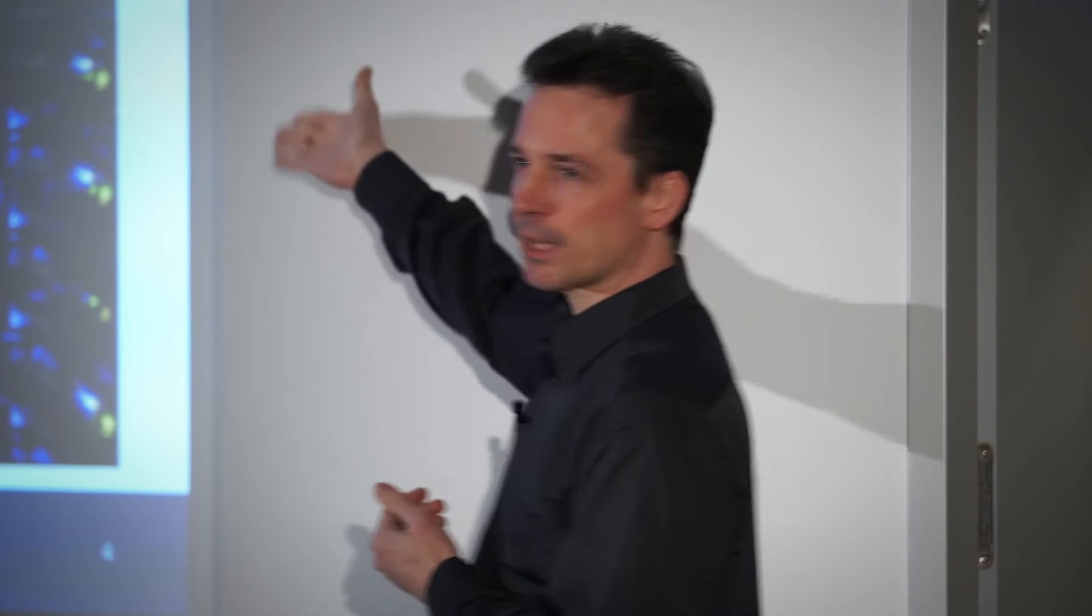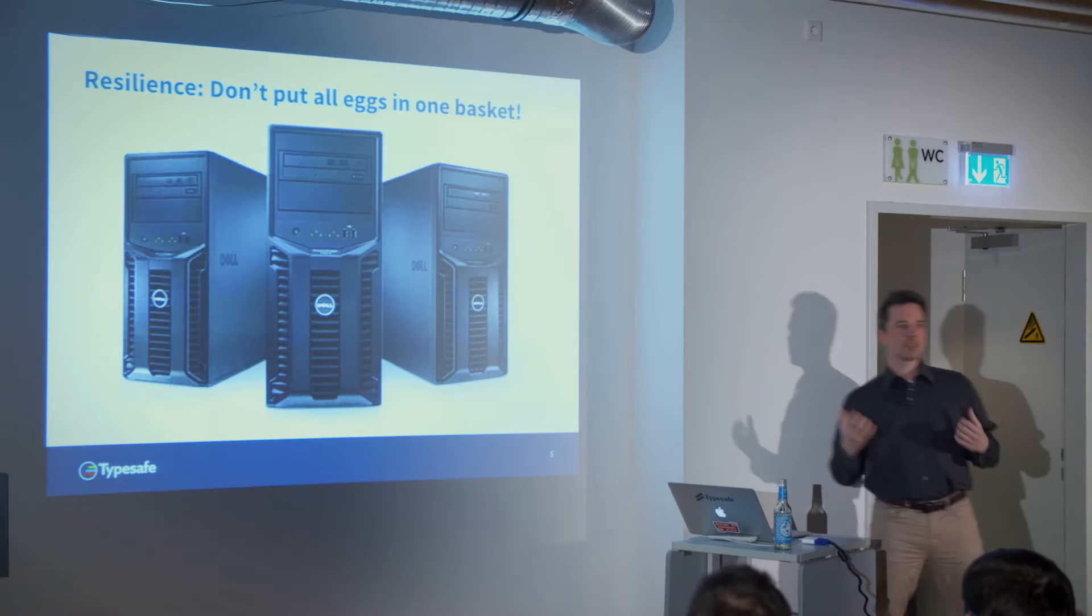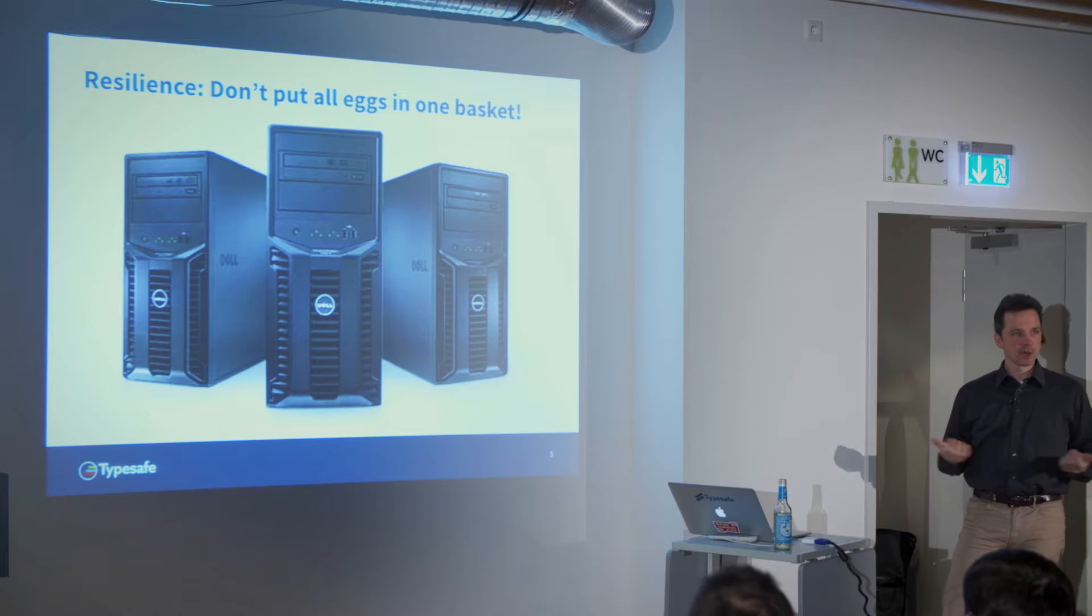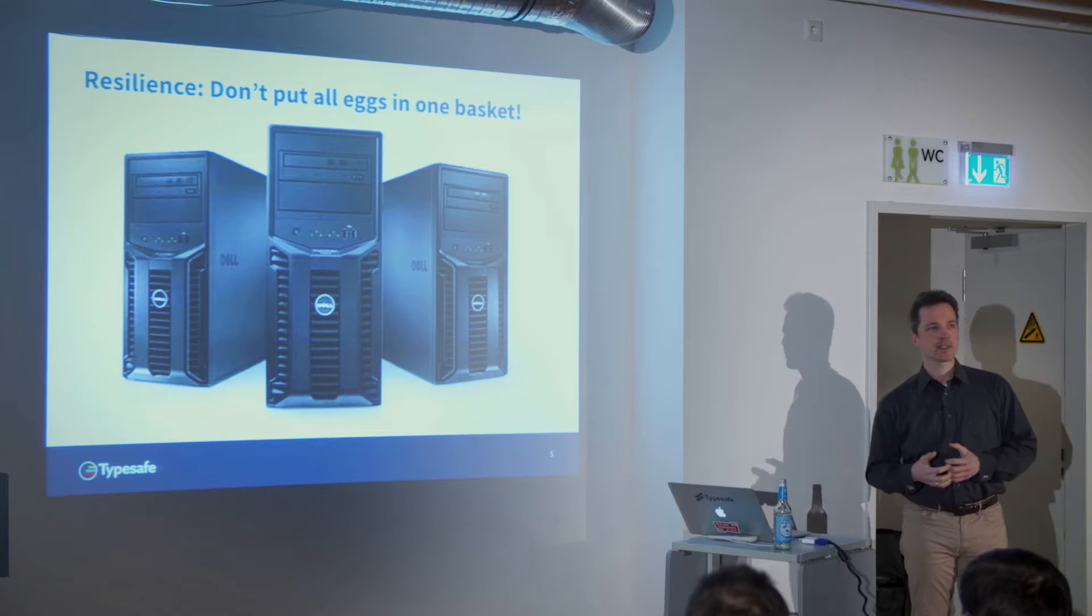We will see what that gives us. If we require scale then it's quite obvious that this is needed. The other main motivating factor is resilience. What happens if something goes wrong? Everybody knows that things can go wrong. And the only answer to this again is that we need to avoid putting all eggs in one basket. We need to distribute.